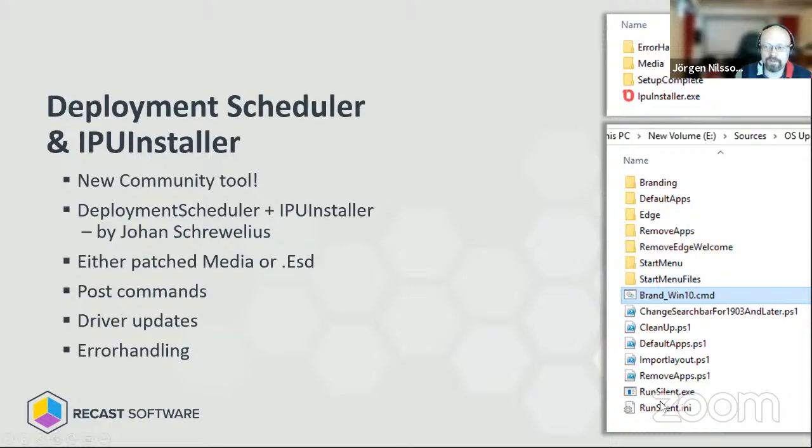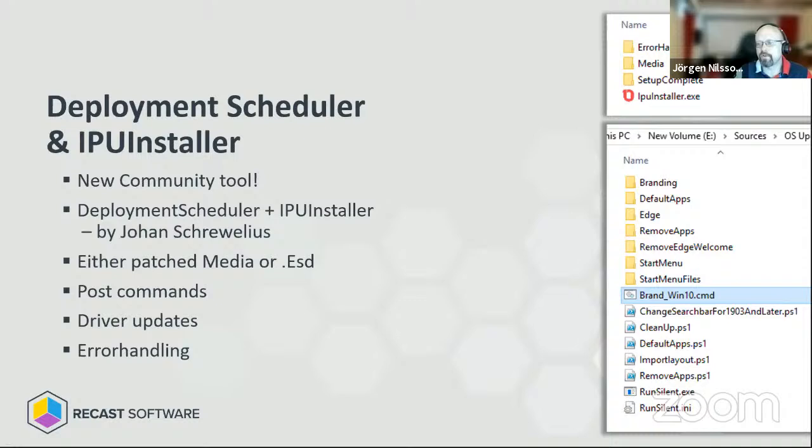We put down a setup config dot INI file, and in that one we call RunSilent.exe, and in there we have all the other commands. So here's the example: rebrand Windows 10, clean it up, default apps, import start layout if you like, change apps, uninstall apps and everything again. That's really the idea.